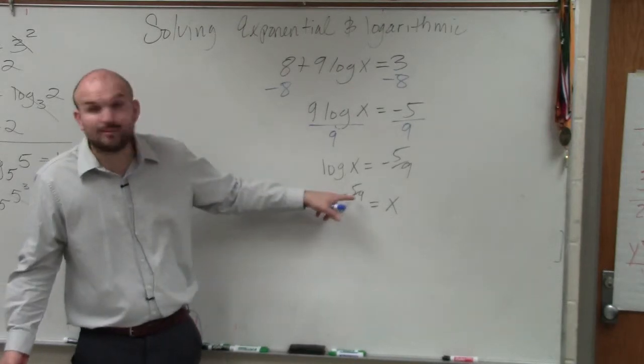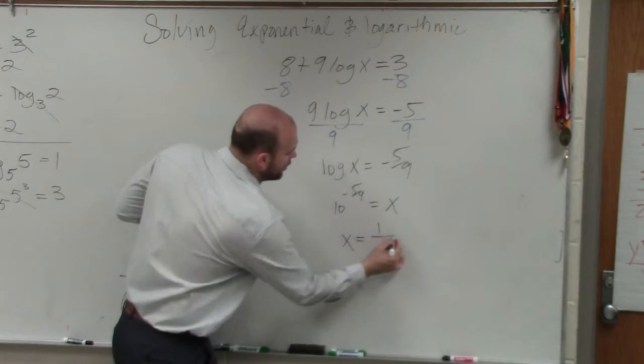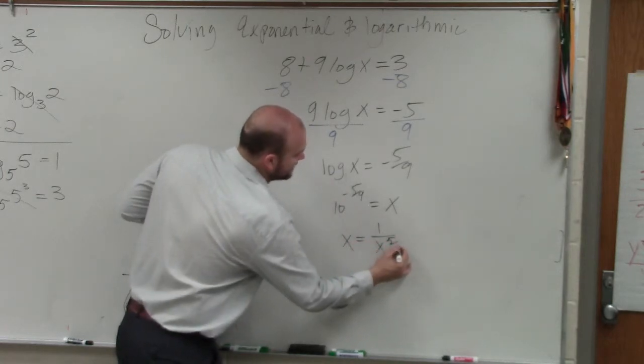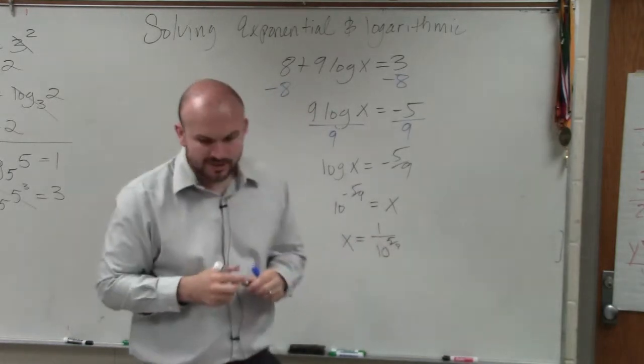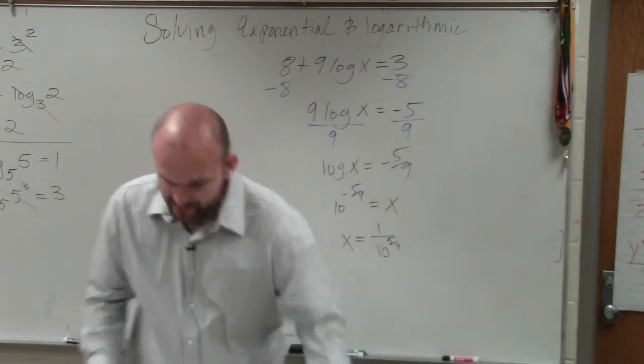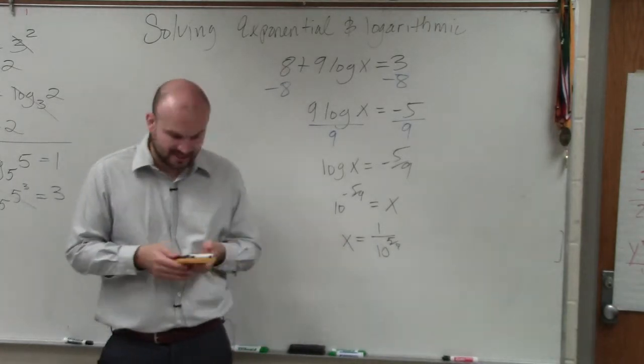Now, remember, whenever you have a negative exponent, you're going to want to rewrite that as 1 over 10 to the 5 ninths. So you guys could obviously rewrite that as a radical expression if you'd like. Or what I just prefer to do is put that as 5 ninths.